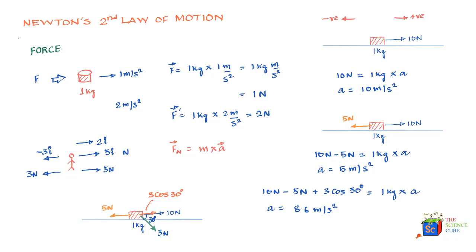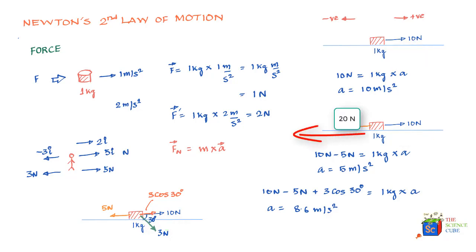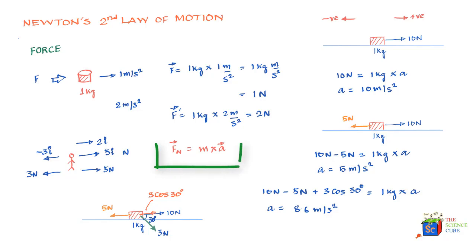In each case, the positive sign of the acceleration indicates the net force is creating acceleration in the right direction. If the leftward force had been larger — say 20 Newtons — the value of a would have been negative, indicating leftward acceleration. To conclude: when using F = ma, always find the net force on the left-hand side first, then equate it with the product of mass and acceleration.